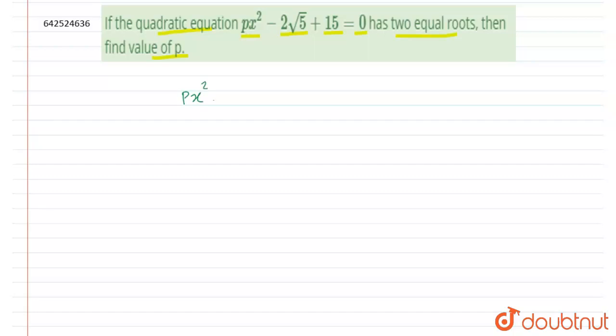That means we can take the case of D = 0. So let us write the equation: px² - 2√5x + 15 = 0. So now we can use the case D should be equal to 0.